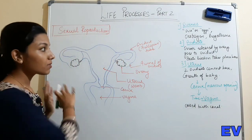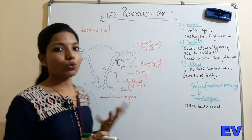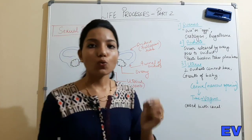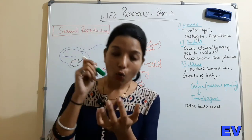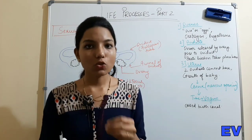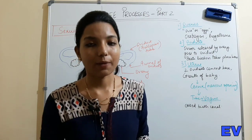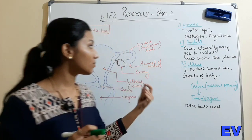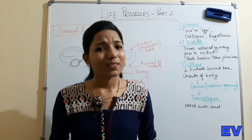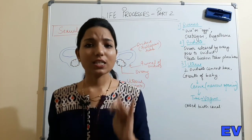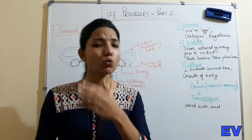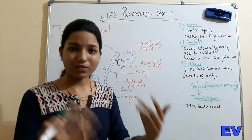The textbook also mentions 'oocyte' - it is a cell in the ovaries from which the ovum is formed. Meiosis happens in the oocyte to form the ovum. The oocyte goes into the oviduct, and then due to the linings of the oviduct, the oocyte is pushed further along.